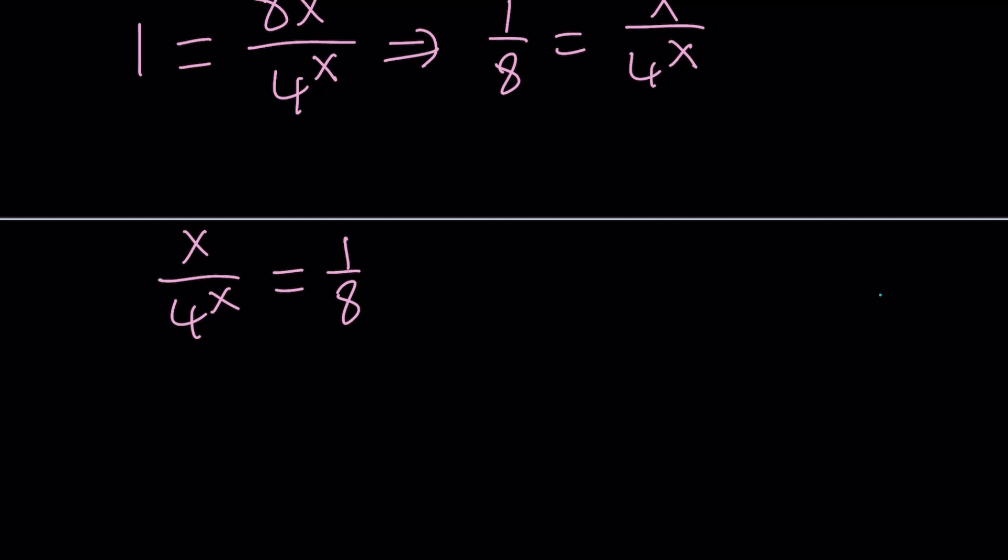So now first of all we want to use the negative exponent here. Write this as x times 4^(-x) equals 1/8. I'm pretty sure at this point or before you found a solution. But let's go ahead and wait for the complete solution.